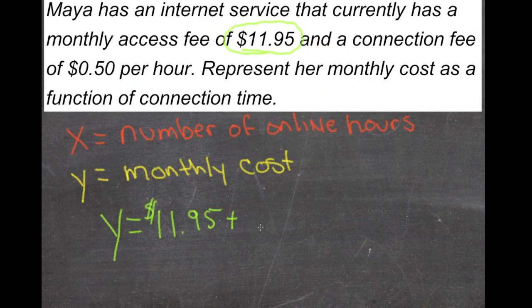In this case we said that was going to be x. So we have plus $0.50 times x hours.